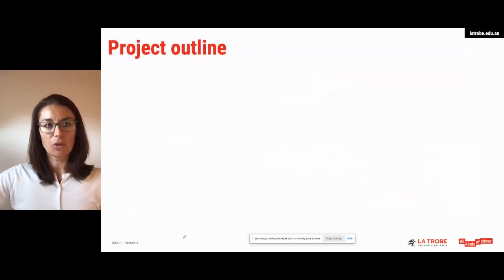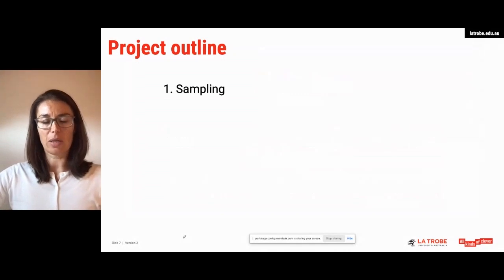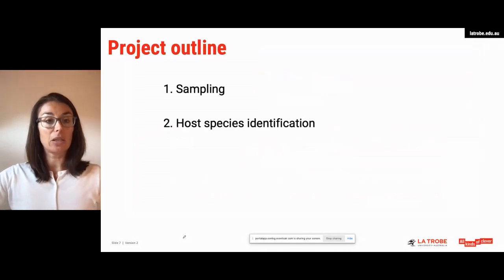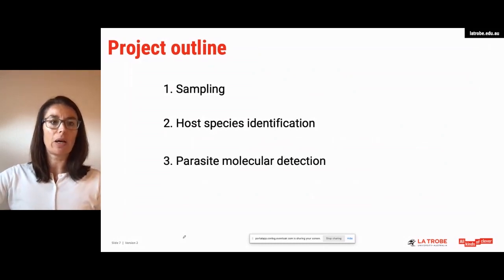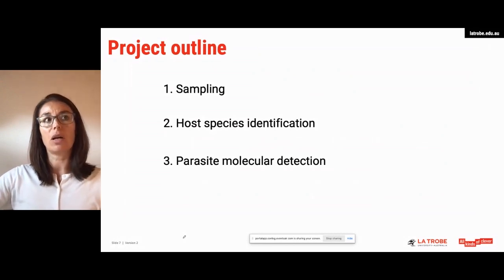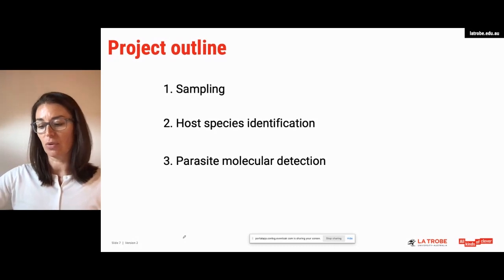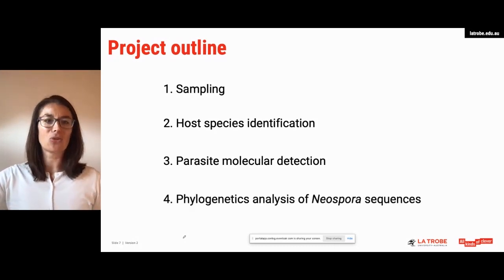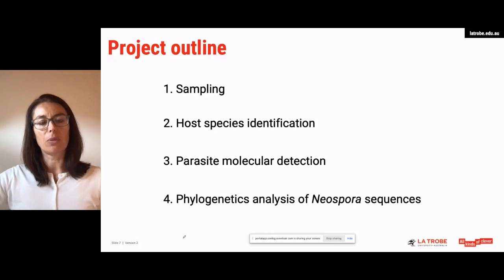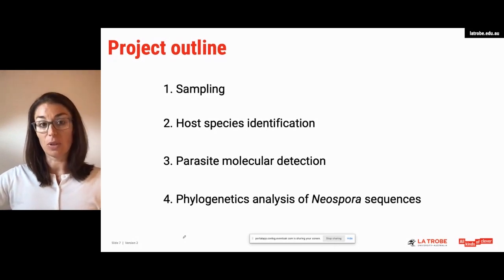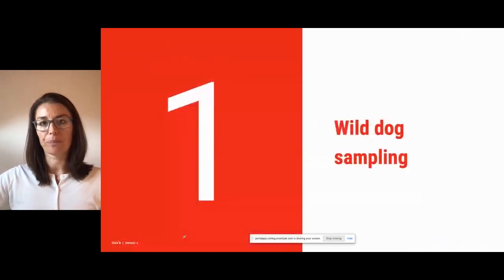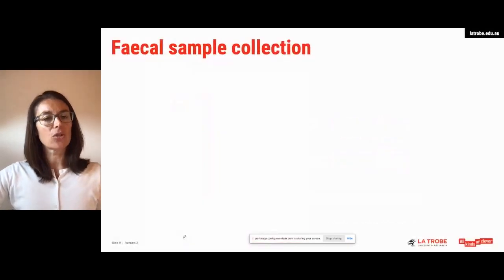Let me give you a brief outline of the project. I'll tell you how we did the sampling and where we did it. I'll tell you how we managed to identify the host species of our samples. I will talk about our efforts to identify the parasite load and different species of parasites in the samples — that's really the crux of what we do in the lab. And then, because today's talk is focused on Neospora, I will tell you about the phylogenetic analysis that we did with the sequences obtained.